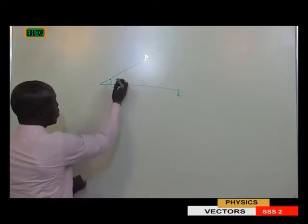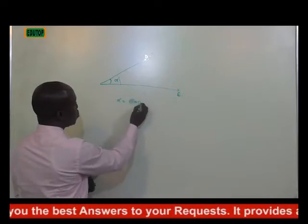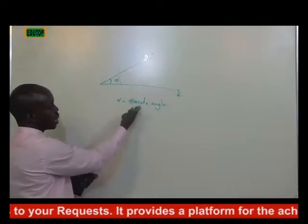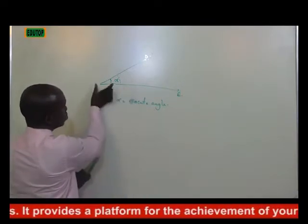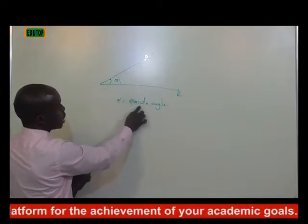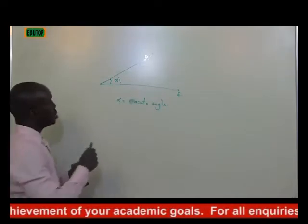Remember, what type of angle is this? Your alpha here is going to be an acute angle. What are acute angles? Angles that are lesser than 90 degrees. So your alpha is an acute angle. So how do you obtain your resultant A? It's very simple.